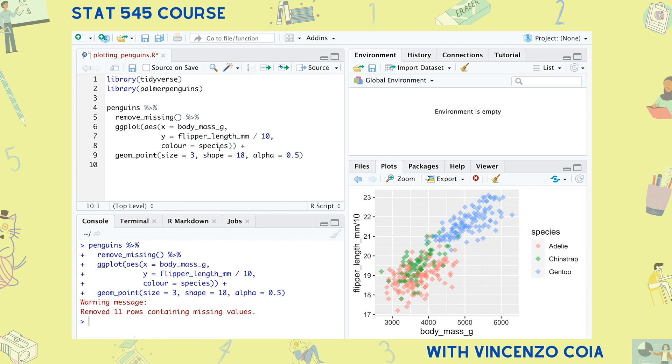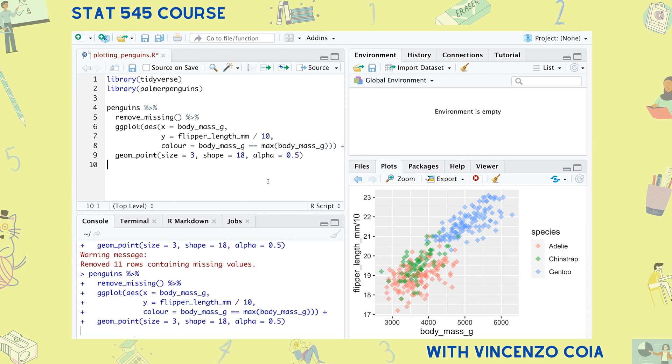For another example, what if we wanted to use color to highlight the largest penguin? Instead of coloring by species, I'll color by whether or not the body mass equals the largest body mass. Notice what's going on here. This logical statement is making a new column of trues and falses and is mapping this binary variable to the color aesthetic.